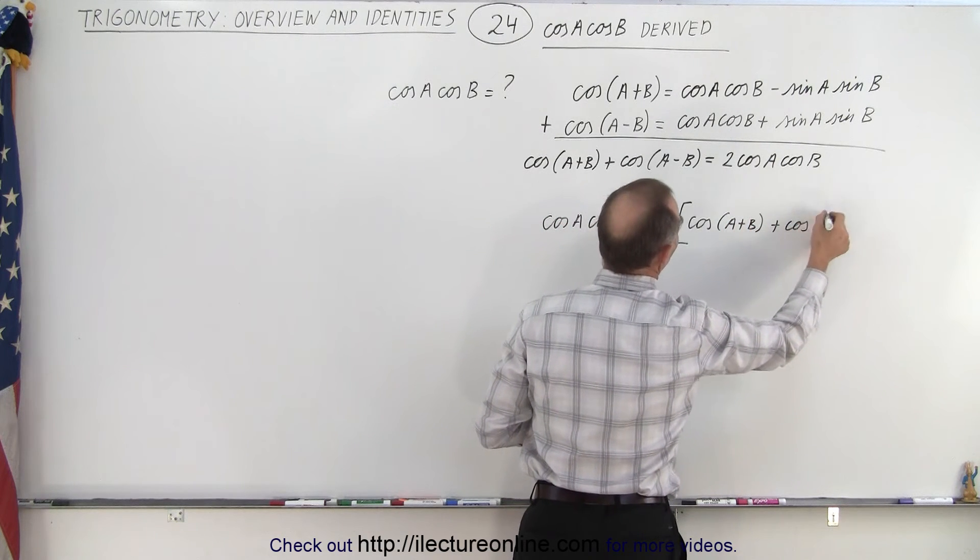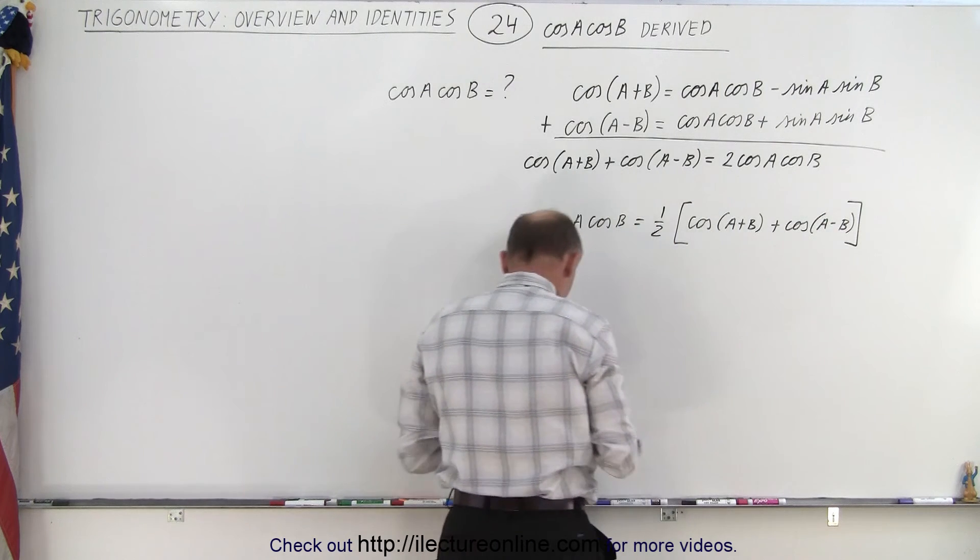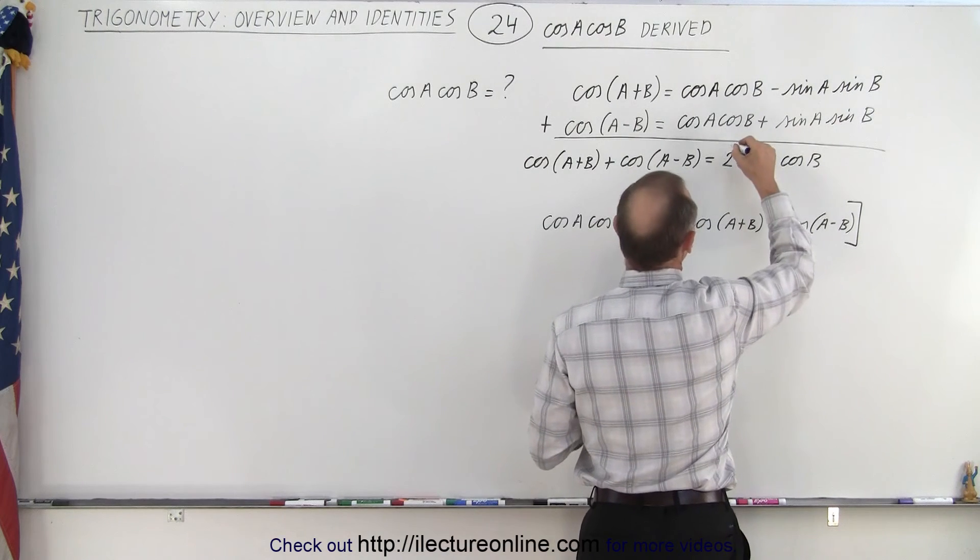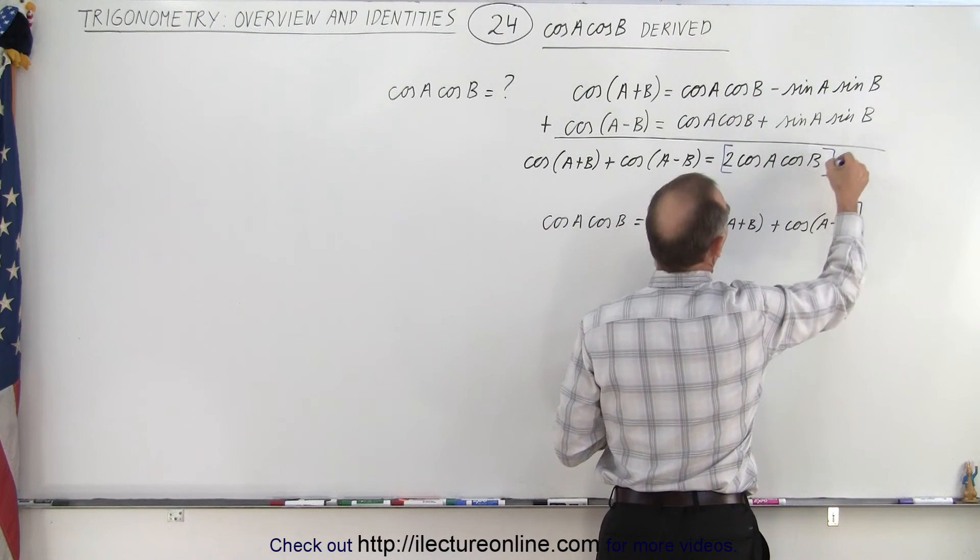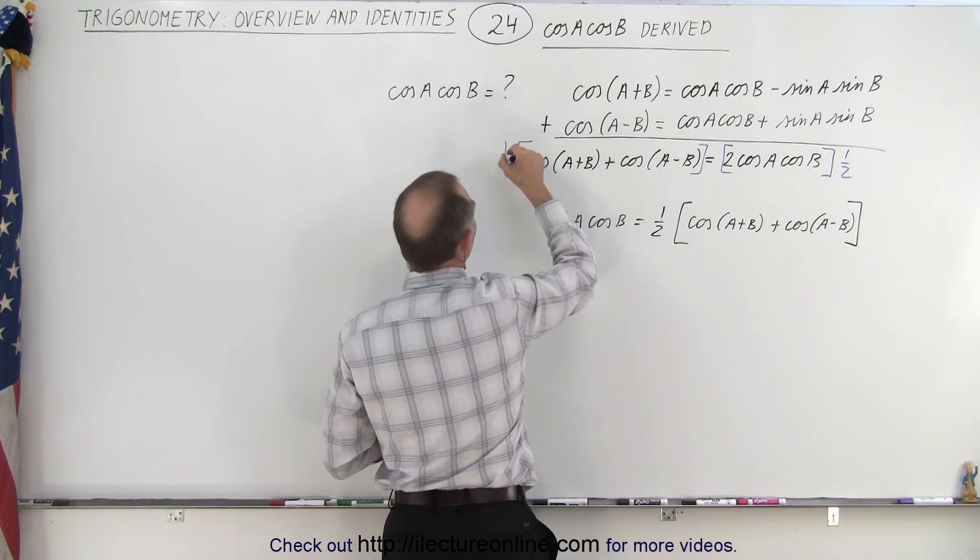plus the cosine of A minus B. So essentially what I did to make sure we were following is I multiplied the right side by one half and I multiplied the left side by one half.